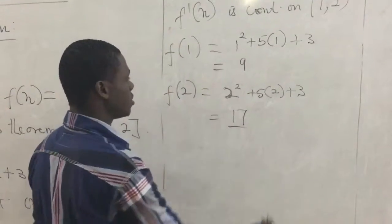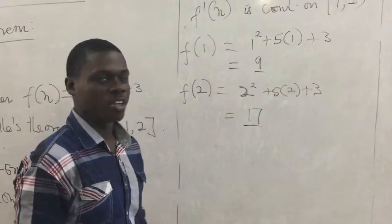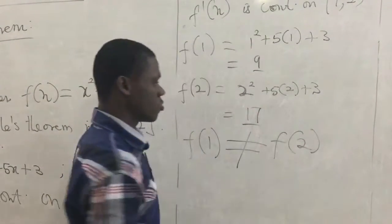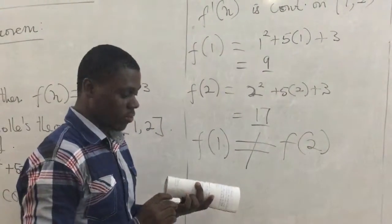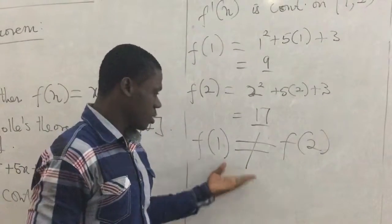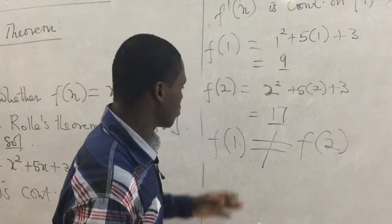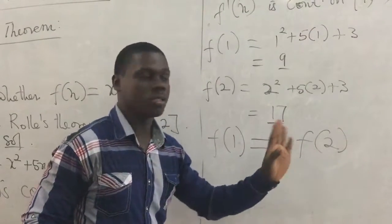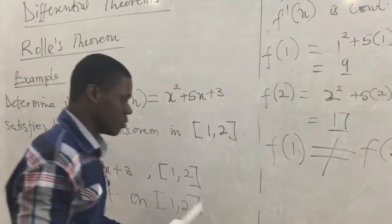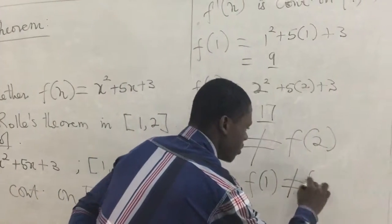We get f(1) = 9 and f(2) = 17. The condition requires that f(1) should equal f(2), but f(1) is not equal to f(2). This is one of the necessary conditions for us to conclude that the function satisfies the theorem. At this point we don't have to continue — we just stop here and conclude.